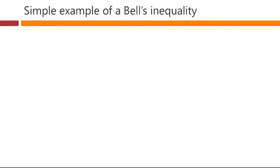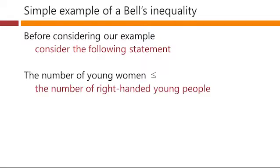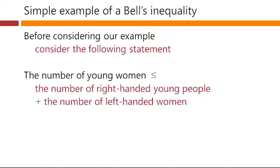So now we're going to look at a simple example of a Bell's inequality. Before we consider our example, though, we're going to look at the following statement: the number of young women is less than or equal to the number of right-handed young people plus the number of left-handed women. Now, this statement is correct. It might be obvious to you, but probably at a first glance it is not quite obvious.